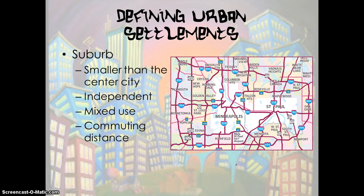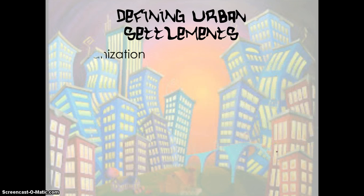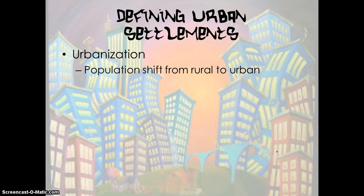Suburbs often include smaller, independent cities — they are separate cities for mixed-use purposes and within commuting distance to the central city. This process has occurred over time and is called urbanization, as the growth of cities and suburbs occurs when the population shifts from a rural to a more urban environment.